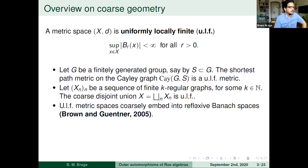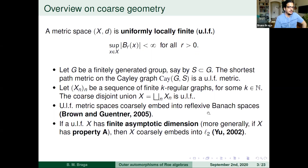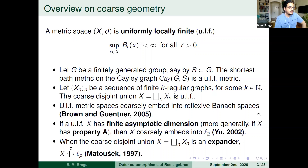Some basic properties: ULF spaces are always coarsely embedded — coarsely equivalent to a subset of some reflexive Banach space, specifically an L2 sum of L^{p_n} spaces with p_n approaching infinity. If you want to embed into a Hilbert space, you need property A or asymptotic finite dimension. Not all ULF metric spaces embed into a Hilbert space — you can get outside this by looking at expanders.